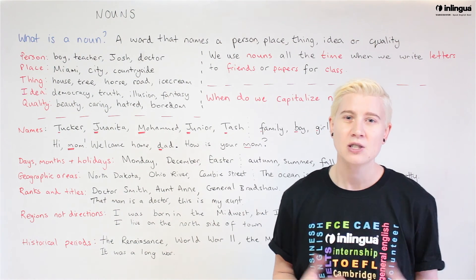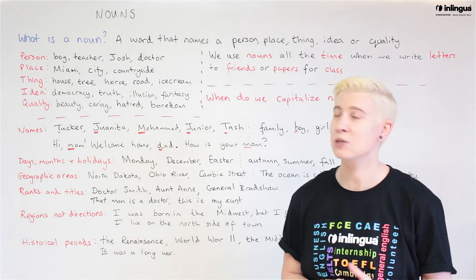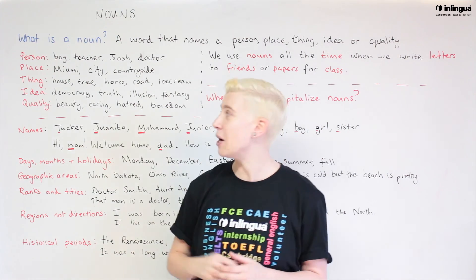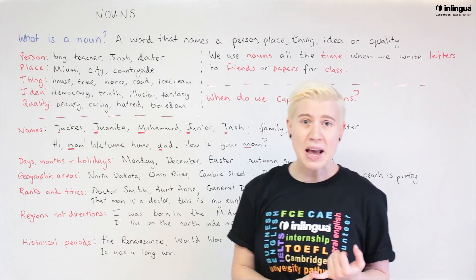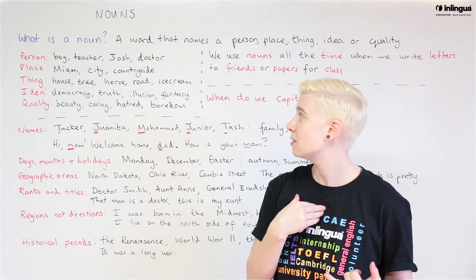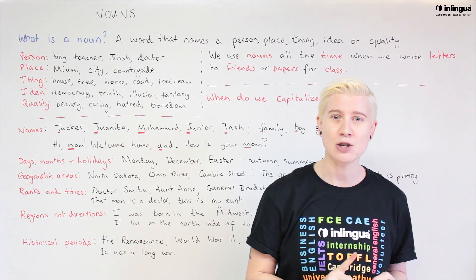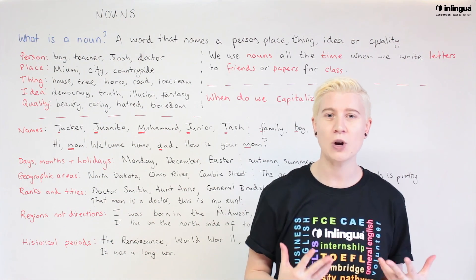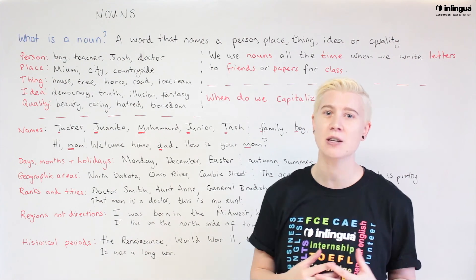So let's look at some examples of nouns. For a person, we've got boy, teacher, Josh and doctor. They are words that name a person.